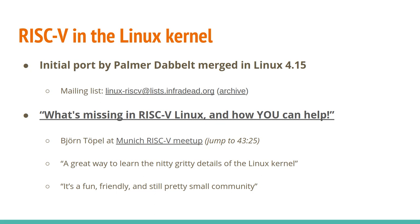RISC-V support was added to the Linux kernel by Palmer Dabbelt back in Linux 4.15, which was several years ago. There is the linux-riscv mailing list, which is the main place to see patches and discussions about RISC-V support in the Linux kernel, with an archive on lore.kernel.org. Last year Bjorn Topol gave an interesting talk at the Munich RISC-V meetup about what's missing in RISC-V Linux and how you can help — the RISC-V architecture support is still relatively new, making it a great way to get involved.